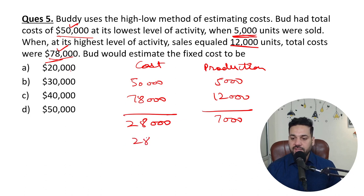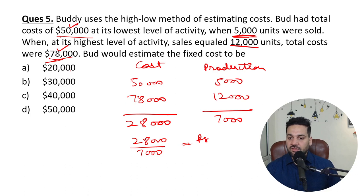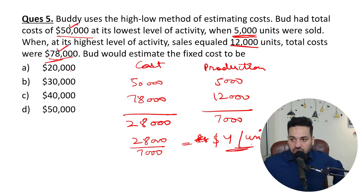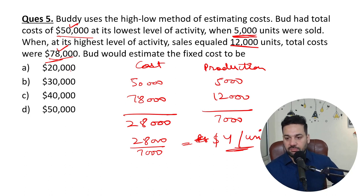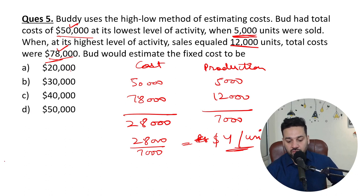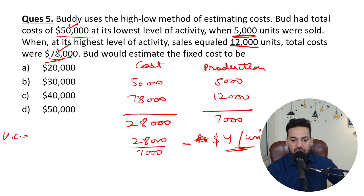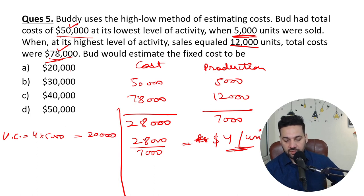4 dollars per unit is your variable cost. Now we can get the fixed cost using the same method. At 5,000 units, variable cost is 4 multiplied by 5,000 = 20,000.